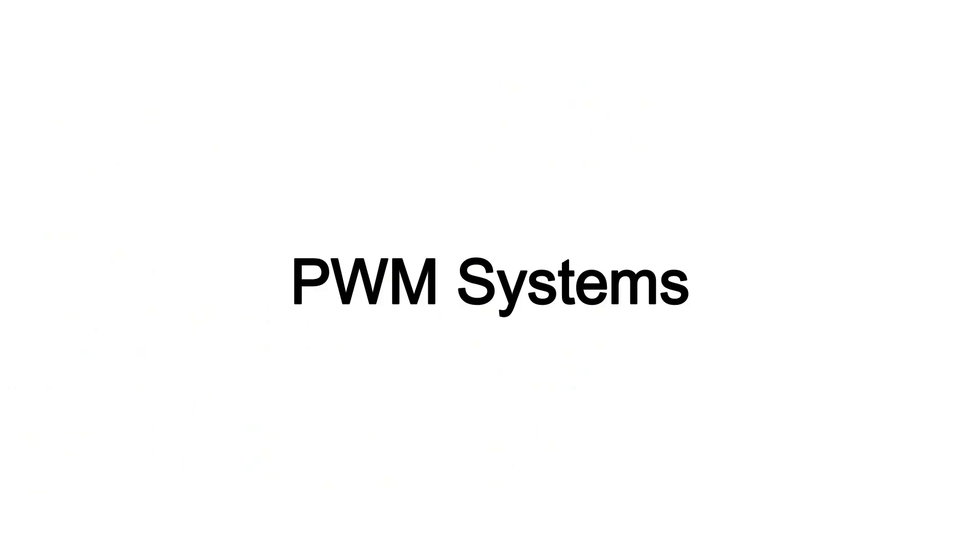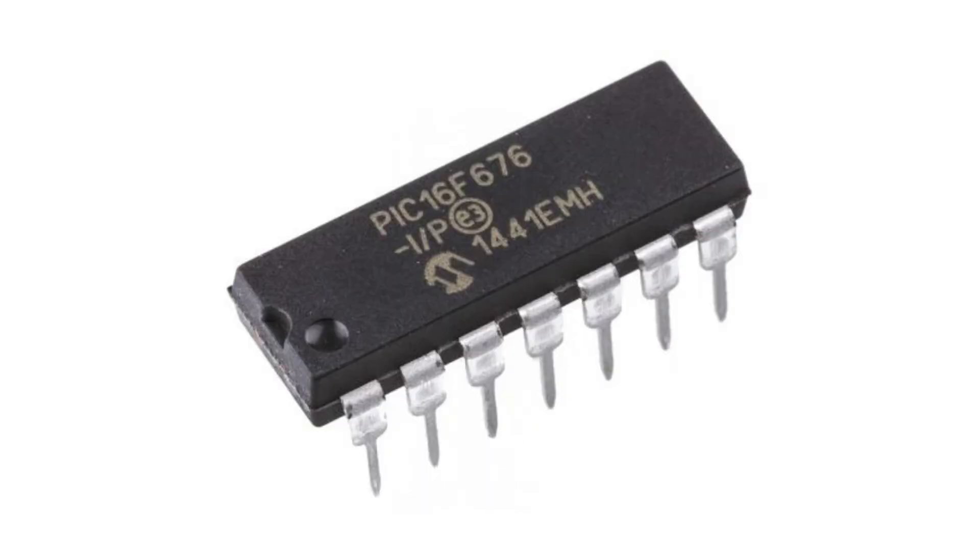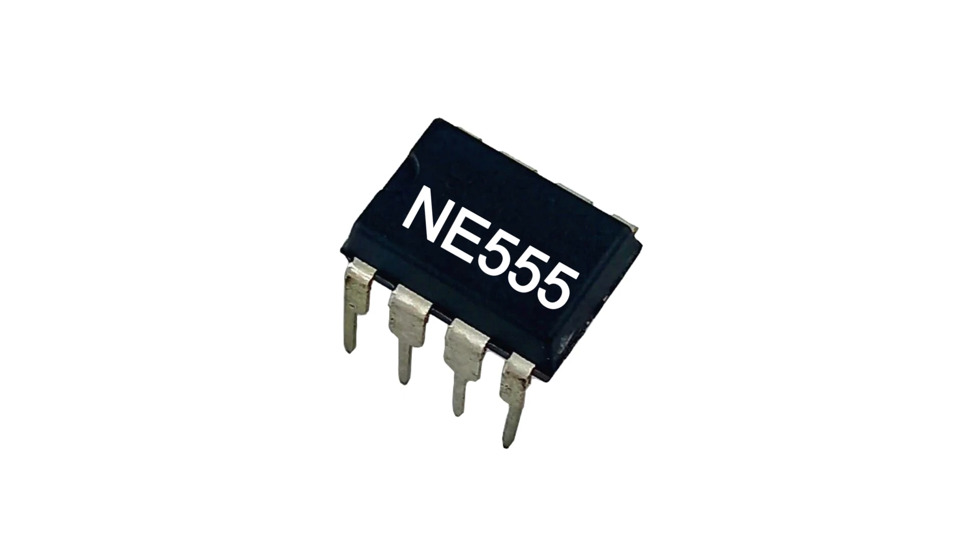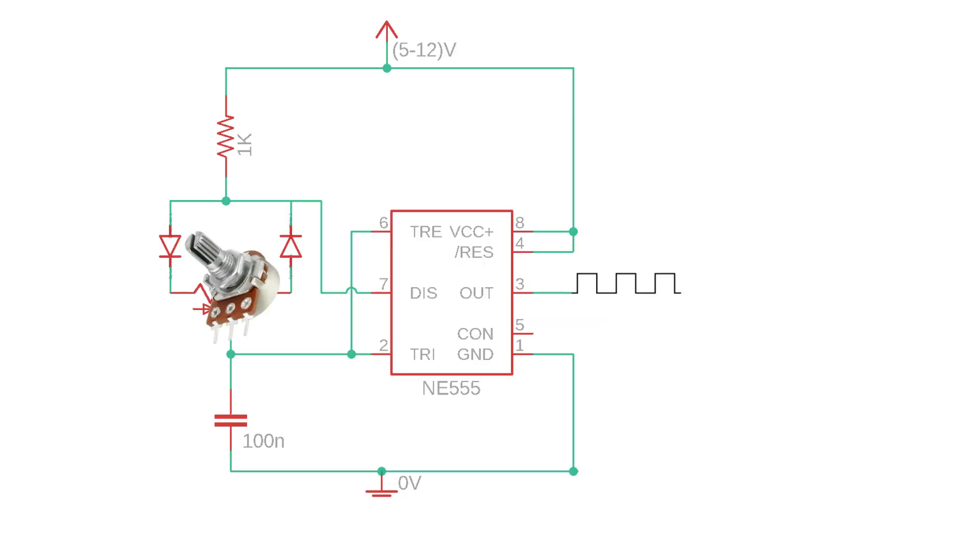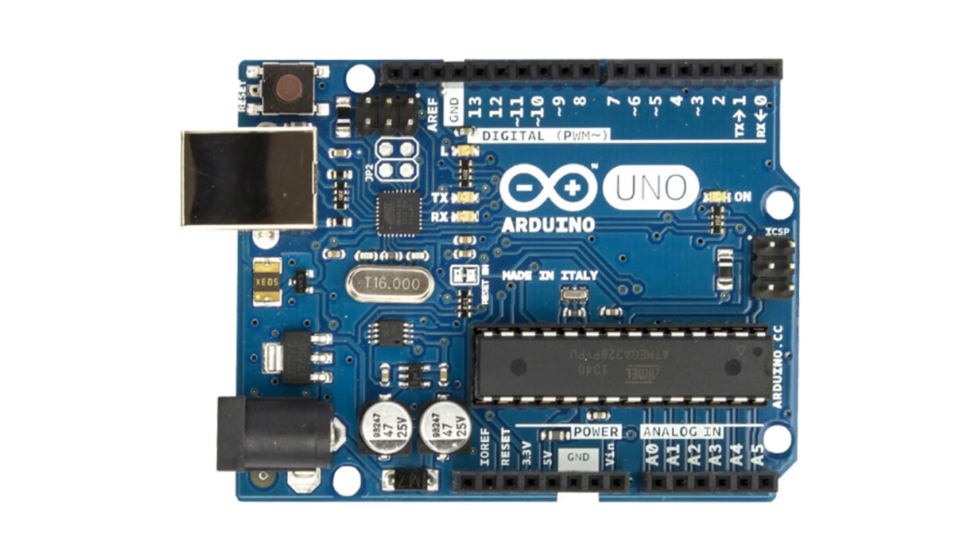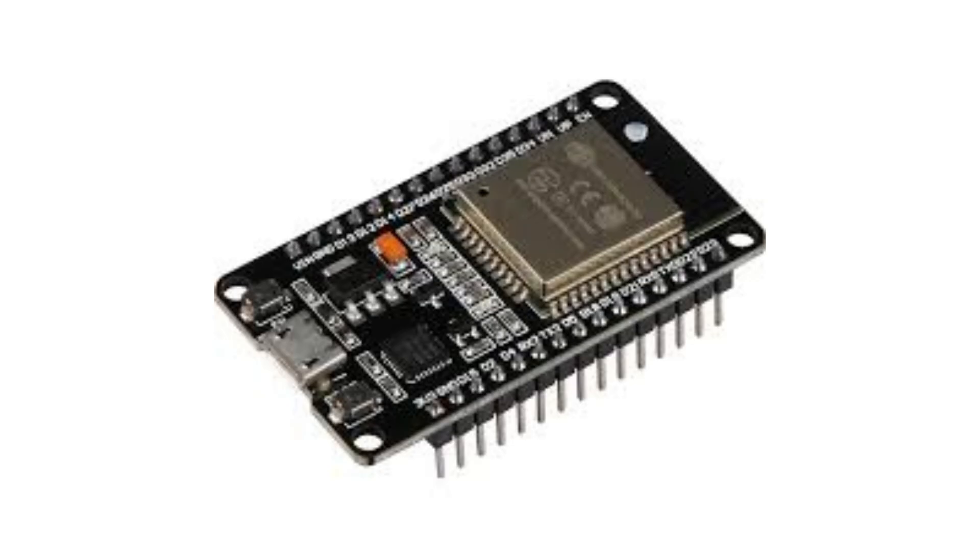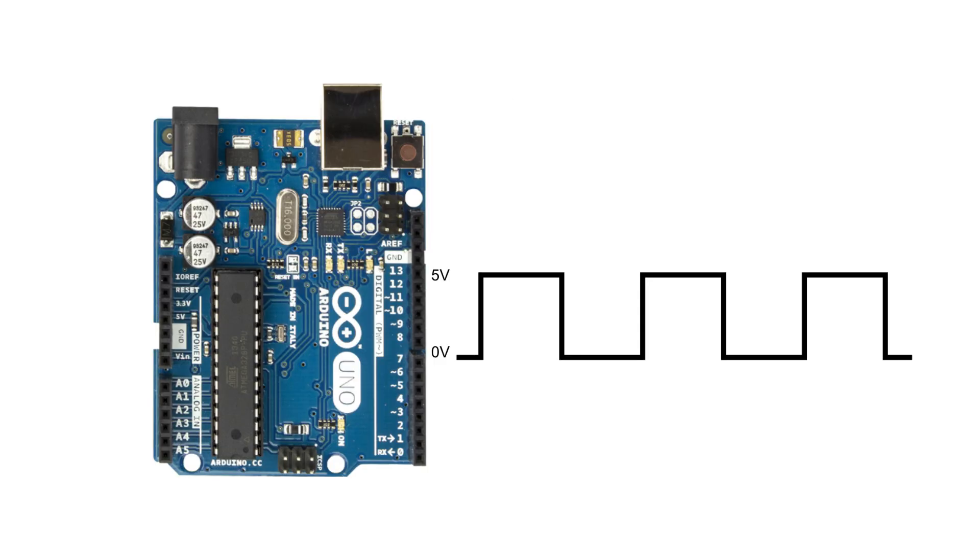You can make a PWM system in two main ways: using a 555 timer IC or using a microcontroller. The 555 IC can generate on-off pulses. A potentiometer changes the pulse width. The pulses control a MOSFET or transistor which drives the motor or LED. A microcontroller like Arduino, PIC, or ESP32 can make PWM signals. The duty cycle is controlled digitally in software and can read sensors and adjust automatically.